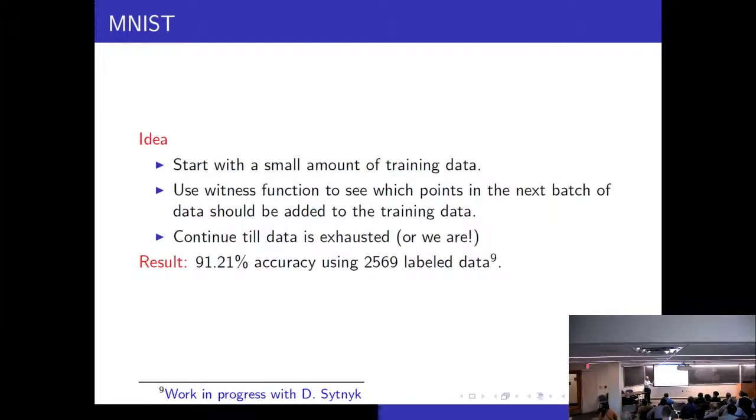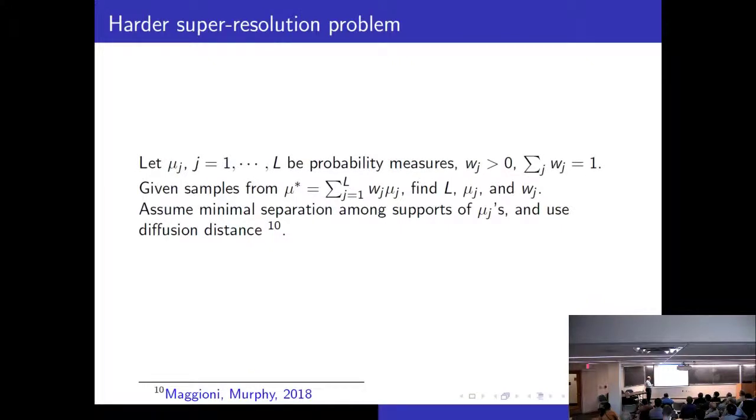And then he used this idea with the MNIST data. The MNIST data is a slightly simpler version of CIFAR-10 where we have 10 digits handwritten. And there are again 10 classes and again 50,000 training points and 10,000 test points. And he got so far 91% accuracy using just 2,569 labeled data points by using this recurrent network approach based on witness function.